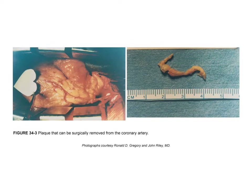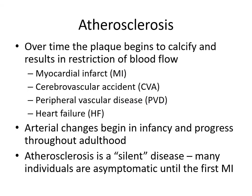Here you can see a plaque that's been surgically removed from the coronary artery — measured in centimeters, so this is quite large and is severely restricting blood flow to the heart. Over time the plaque begins to calcify and will result in restriction of blood flow. This can cause myocardial infarctions, cerebrovascular accidents or CVAs or strokes, peripheral vascular disease, and heart failure. Arterial changes begin in infancy and progress throughout adulthood. Atherosclerosis, similar to hypertension, is a silent disease, as many individuals are asymptomatic until their first heart attack.